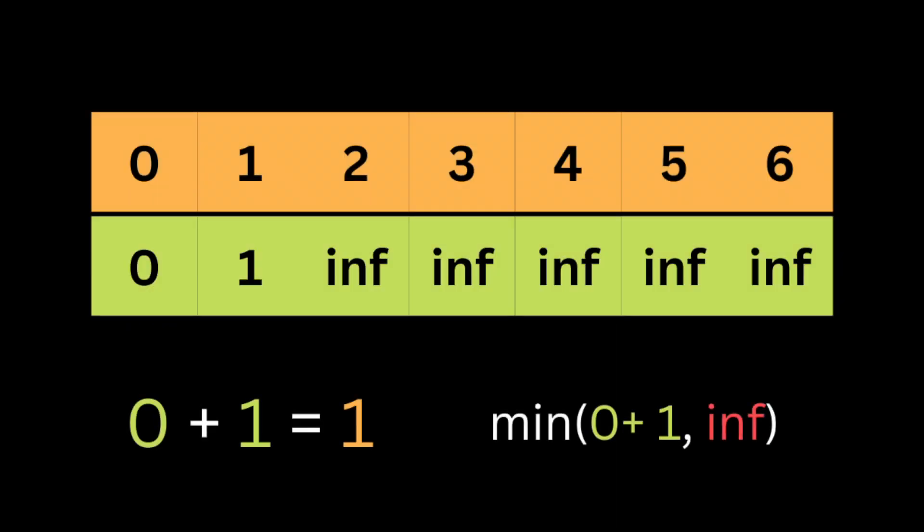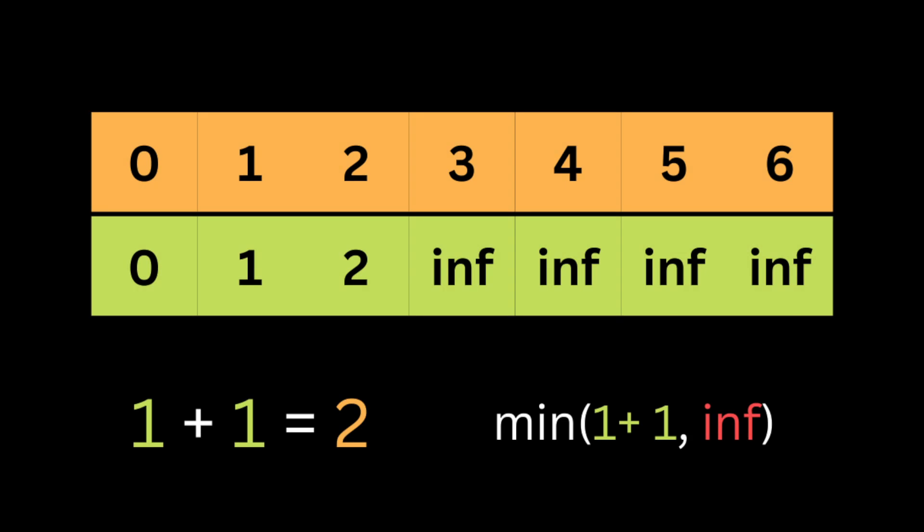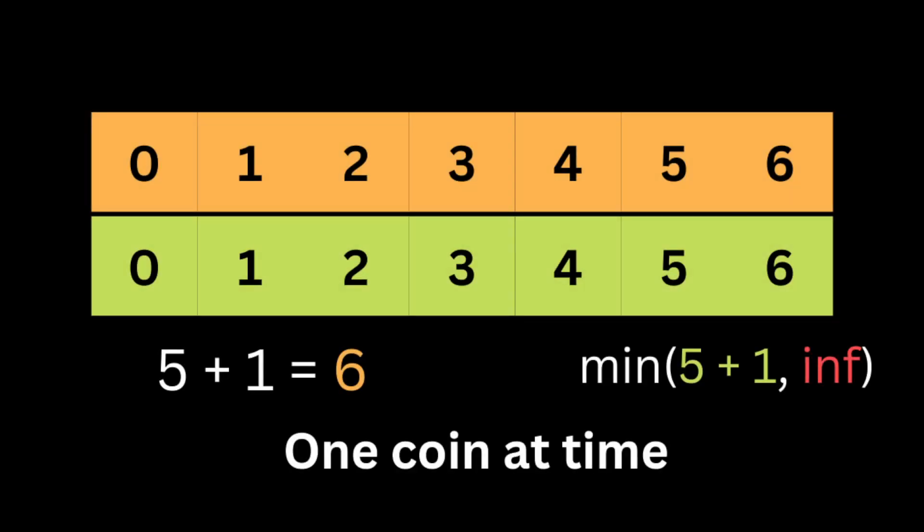Let's look at each coin on its own to figure out how many coins are needed to make each amount. Starting with coin one: to make amount one, we take the value at amount zero (which is zero) and add one coin, giving us one. We compare one versus infinity — one is smaller, so we replace infinity with one. We continue: to make amount two we add one more coin, giving two. We replace infinity with two, the new minimum.